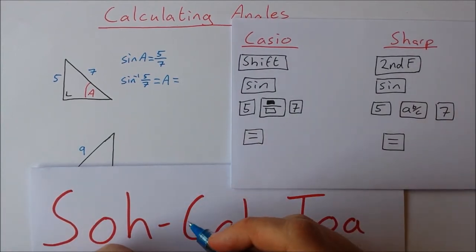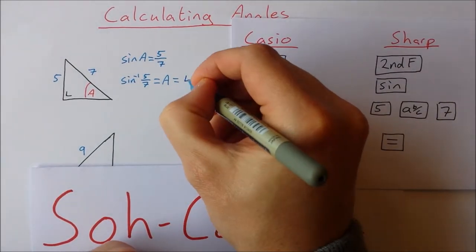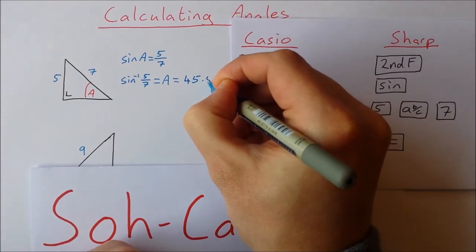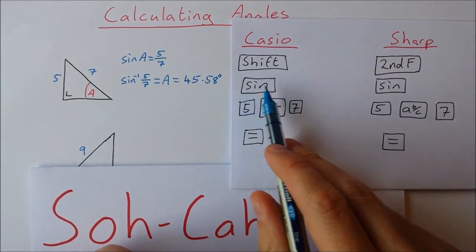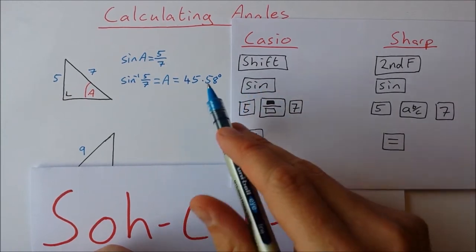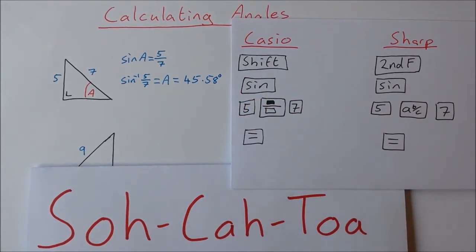So the answer I get when I put that into the calculator is 45.58 degrees and there might be more decimals after that but I've just rounded it to two decimal places.